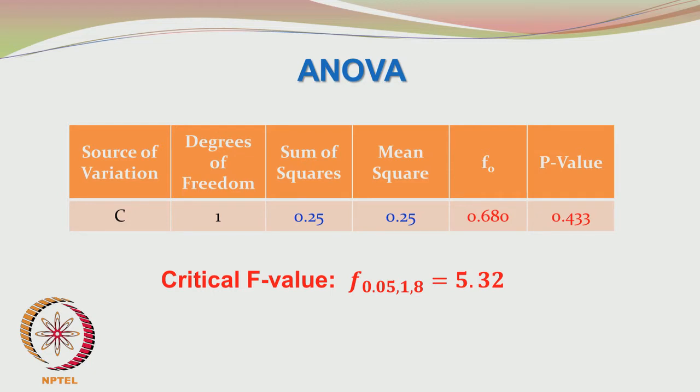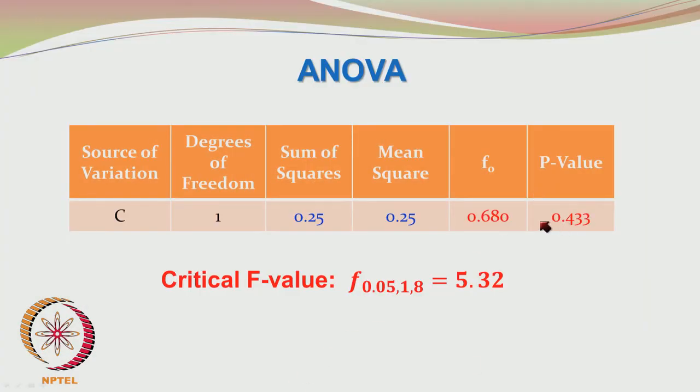For factor C, the P value came to be 0.433, which was greater than 0.05, and hence we accept the null hypothesis. What is this P value? The P value is the Type 1 error. The Type 1 error is the probability of wrongly rejecting the null hypothesis. If this probability is very small, we reject the null hypothesis; if it is pretty high, we accept it. In this case, the probability of wrongly rejecting the null hypothesis is as high as 0.433.